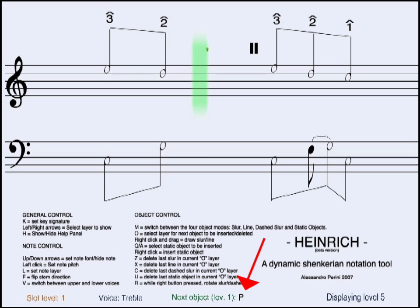You can cycle through the static objects by pressing A or Q. We're now drawing on layer 2. As you can see on the left bottom, we selected level 2 for this slot by pressing L.